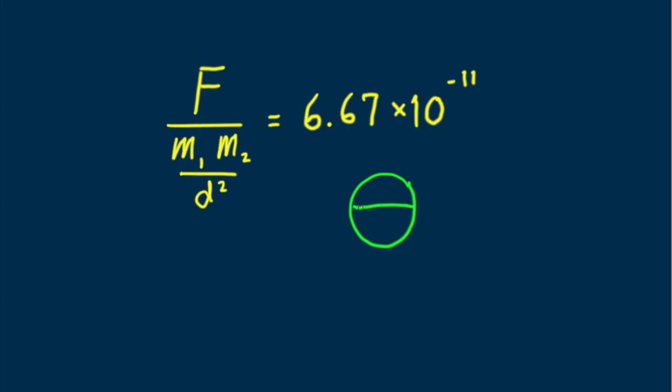This is similar to the circumference of a circle C divided by its diameter D always producing the same number, 3.14, which we call pi. Pi has no units because distance divided by distance in the same units cancels.